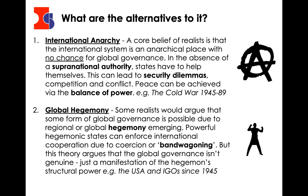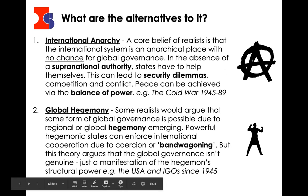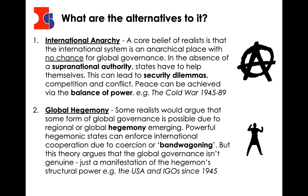The first alternative is international anarchy — this is kind of what realists believe the world is. Global politics, you could argue, doesn't have any rules. It is just anarchical — there is no supreme authority, only states, and these states have to look after themselves because there's no supranational authority. In international anarchy, there is no chance for global governance. But that doesn't mean everyone's killing each other all the time — peace can be achieved via a balance of power, as we've seen throughout history in the Cold War.